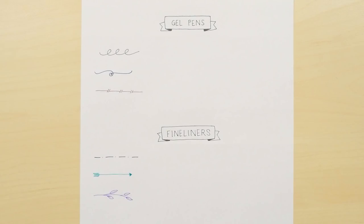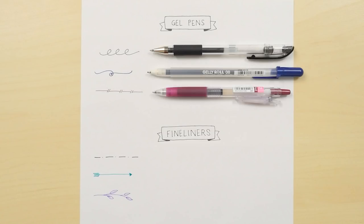Here are our top gel pens for embellishing hand lettering. Uniball Signal, Sakura Jelly Roll, and the Pilot Juice.